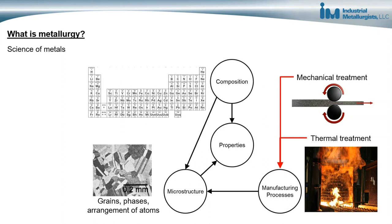By understanding the relationship between properties, composition, microstructure, and manufacturing processes, we are able to develop alloys and develop manufacturing processes capable of producing metals that have very specific properties and that meet the property requirements for different applications.